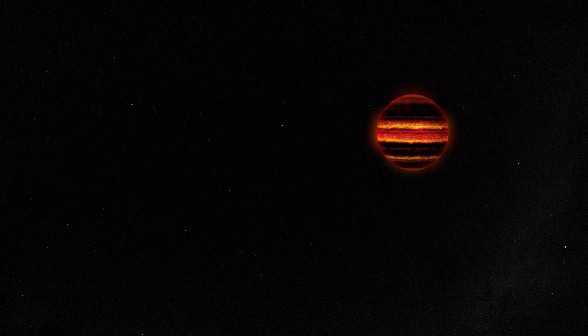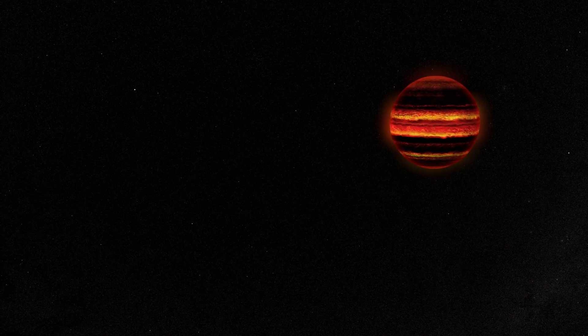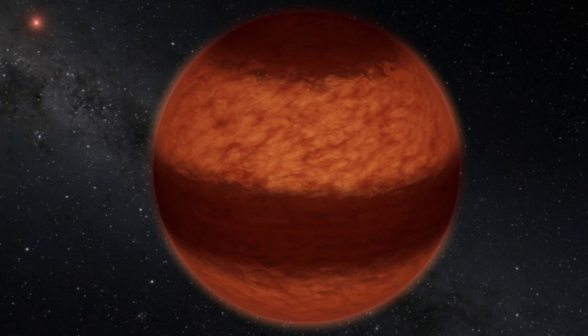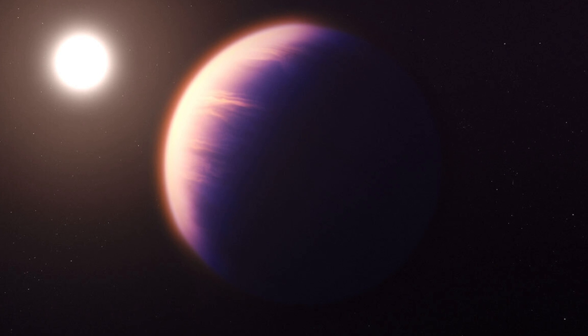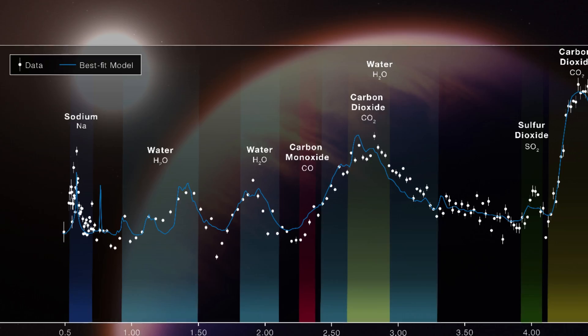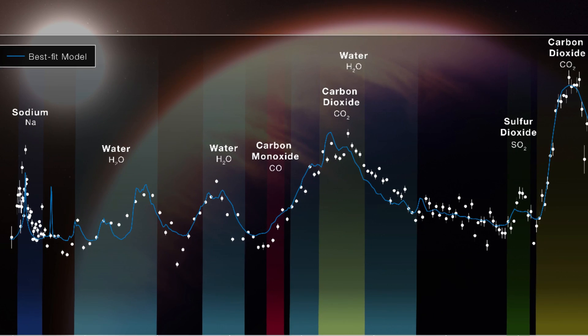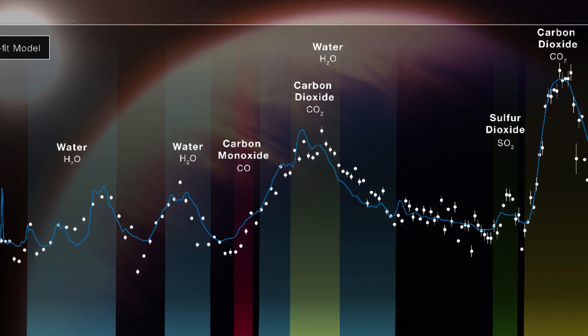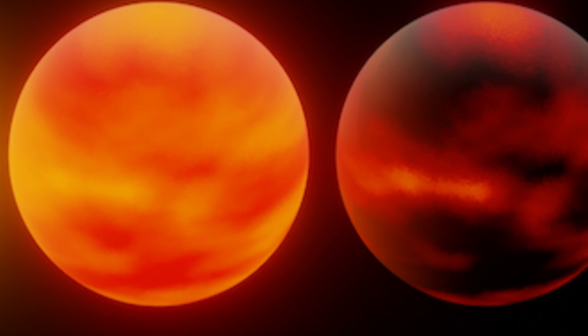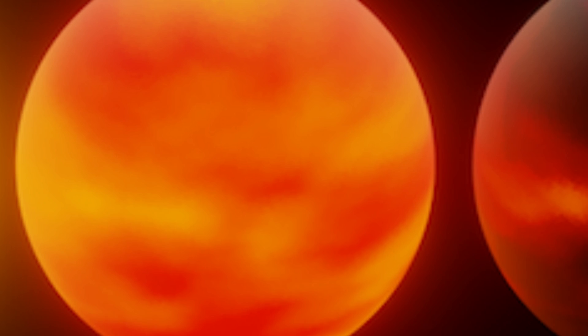Even odder, Webb discovered that the brown dwarf has sand and silica clouds, which is unusual for an object of this kind. The exoplanet is also young and small for a brown dwarf. Like WASP-39b, Webb was able to identify specific chemicals in the strange atmosphere of the brown dwarf, including water, methane, carbon dioxide, and potassium. The ratios of the various components imply that the brown dwarf has an explosive atmosphere.